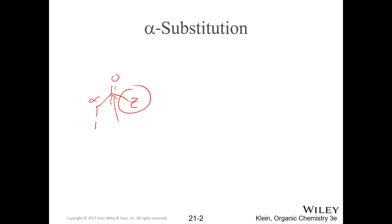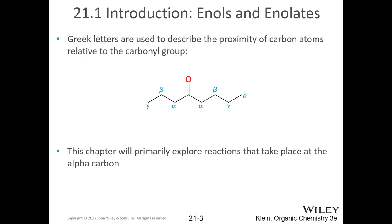We're going to take advantage of the fact that a hydrogen at the alpha position is acidic, specifically because the carbonyl is a polar bond that inductively pulls on the next bond. This takes electron density away from the hydrogen, making it more acidic — more toward a proton with no electrons. When talking relative to a carbonyl group, we use Greek letters: alpha is most common.